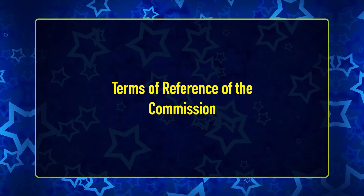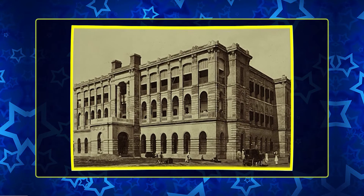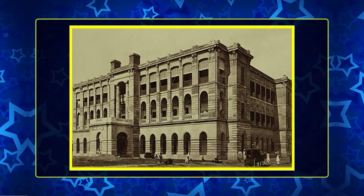The Commission had six members besides the chairman. The terms of reference of the Commission included: first, to enquire into the conditions and prospects of the University of Calcutta, and to consider the questions of a constructive policy in relation to the problems it presents.